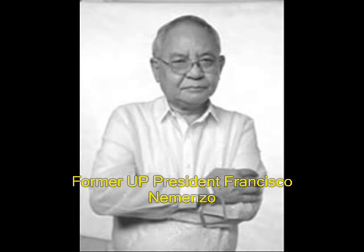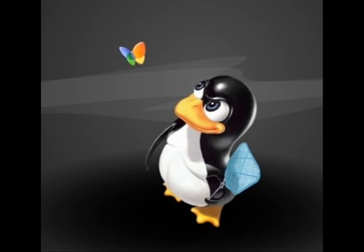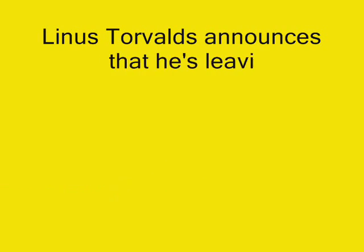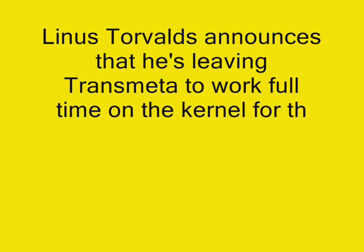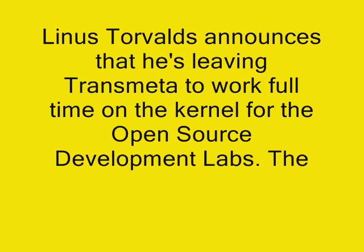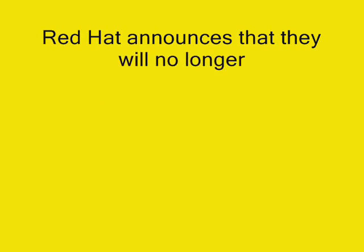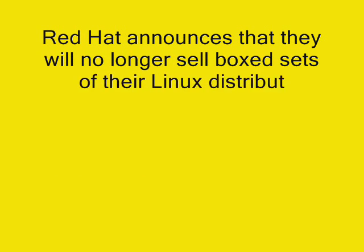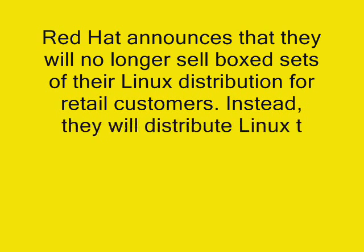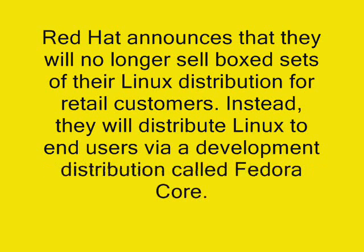November 2002: former UP president Nemenzo released a letter encouraging the UP community to shift from Windows to Linux. June 2003: Linus Torvalds announces that he's leaving Transmeta to work full-time on the kernel for the Open Source Development Labs. The Torvalds family moves to Oregon. July 2003: Red Hat announces that they will no longer sell boxed sets of their Linux distribution for retail customers. Instead, they will distribute Linux to end-users via a development distribution called Fedora Core.